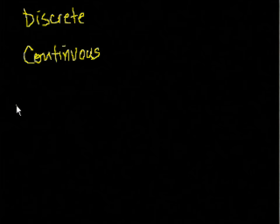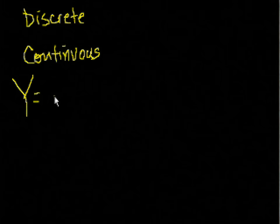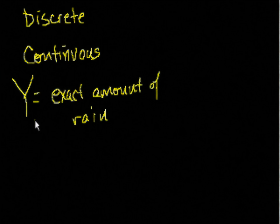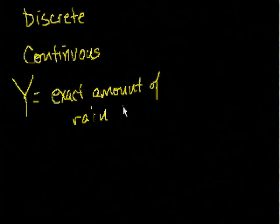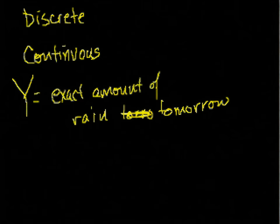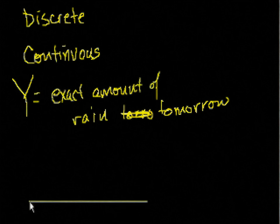The example I gave for continuous: let's say I have the random variable capital Y — they do tend to be capital letters. Y is equal to the exact amount of rain tomorrow. I say rain because I'm in Northern California and it's actually raining quite hard right now. We've been having a drought, so that's a good thing. I don't know what the actual probability distribution function for this is, but I'll draw one and then we'll interpret it, so you can think about continuous random variables. Let me draw its probability distribution, or what they call its probability density function.